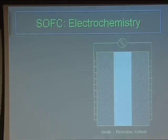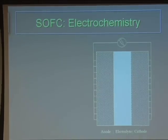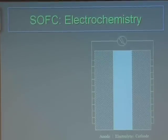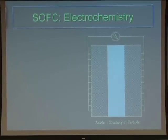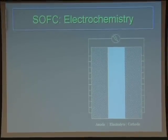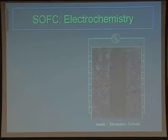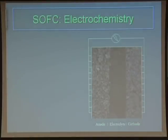I want to go over a quick background on the electrochemistry of a solid oxide fuel cell. This is the basic construction: you have three layers, a solid dense electrolyte sandwiched between your two electrodes. This is a micrograph of what that looks like. Generally this is a thin film electrolyte, solid and dense, and this is about 10 microns across, with about 10 microns of active electrode next to this interface.